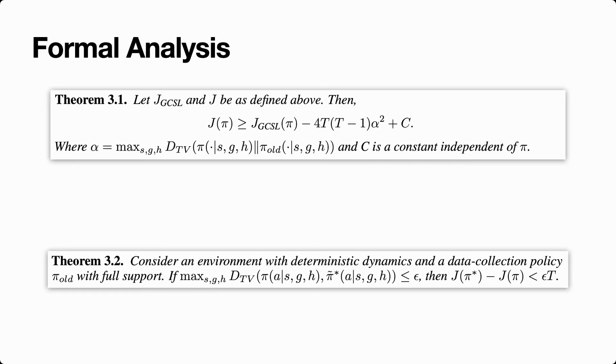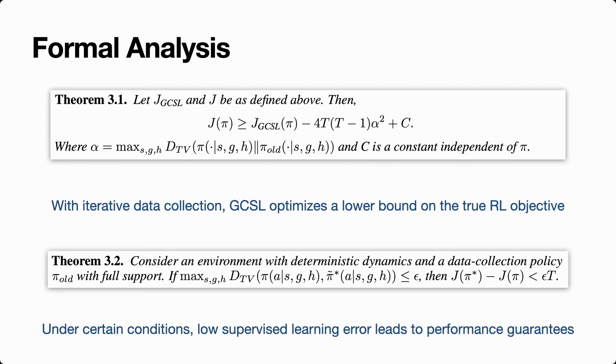We analyzed GCSL formally, borrowing tools from the analysis of behavioral cloning and policy gradient methods. If you're interested in the details, please check out the paper, but at a high level, we drew two conclusions. First, when data collection and optimization are iterated, GCSL actually optimizes a lower bound on the true RL objective. Here, this repeated self imitation is important to get the result. And second, under certain conditions on the environment, we actually have a performance guarantee that when we can sufficiently minimize the supervised learning objective, then we are guaranteed to have learned a near optimal policy.